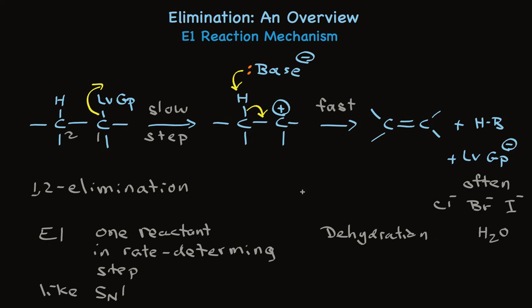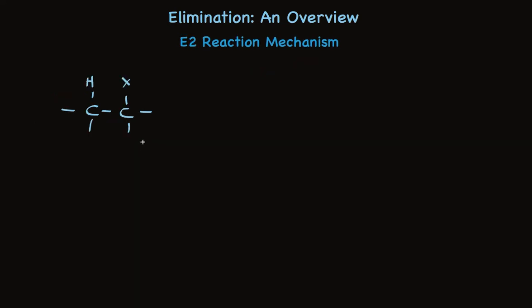Now I'd like you to take a look at the second step with me for a minute. The reason that base can abstract that proton is that there's a positive charge on the carbon atom next to it. Keeping in mind that second step, the loss of a proton, because there's a positive charge next to the carbon.